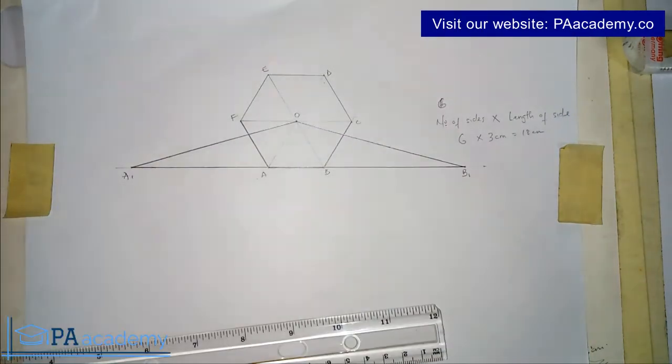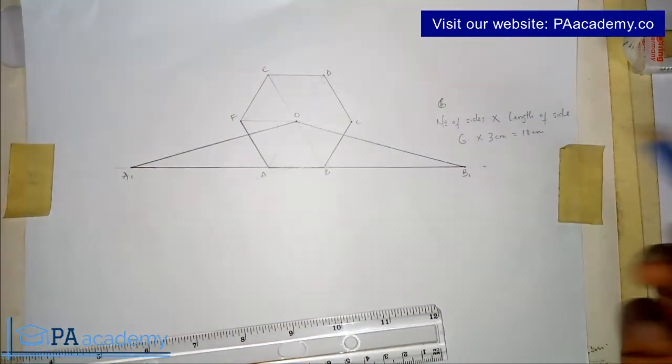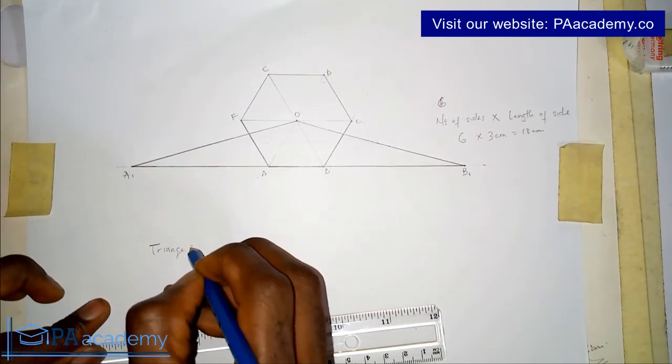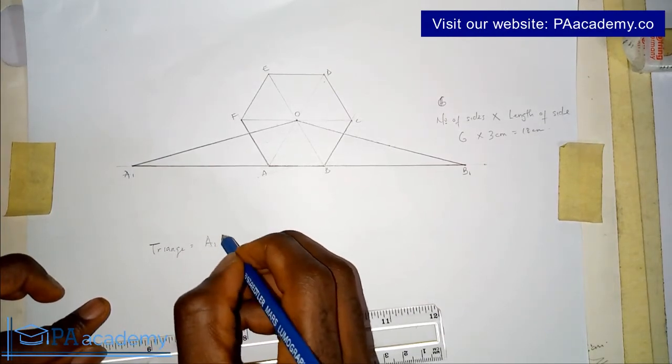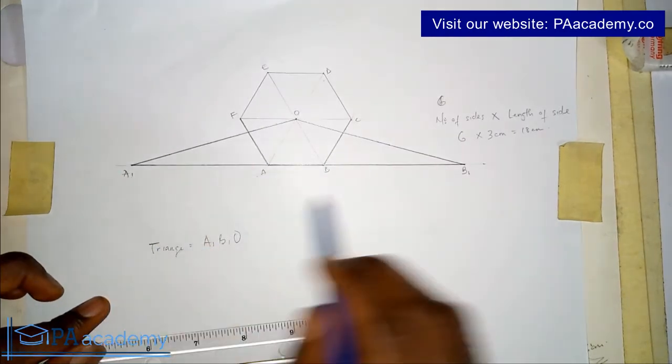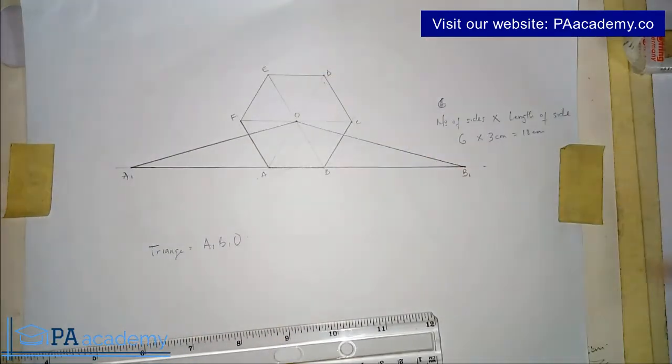So now we already have the triangle that is equal in area to the polygon. And what is that triangle? Triangle A1. So the triangle is A1, B1 and O. So this is the triangle. So the area of this triangle is the same thing as the regular polygon. So this is how you go about if you are asked to draw a triangle that is of equal area to a given regular polygon.